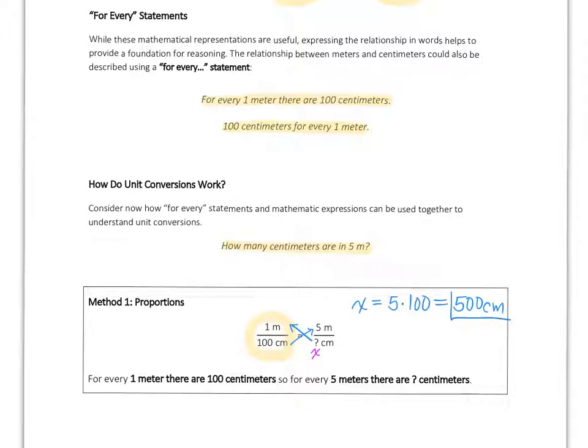We could get our same answer by finishing our 'for every' statement. So for every 1 meter there are 100 centimeters. So for every 5 meters, there are 500 centimeters.